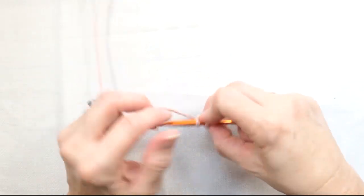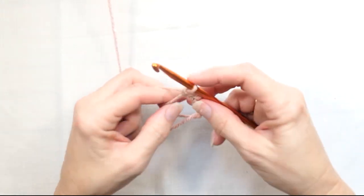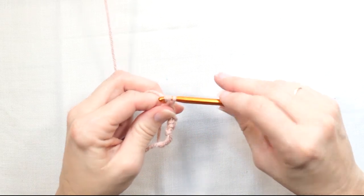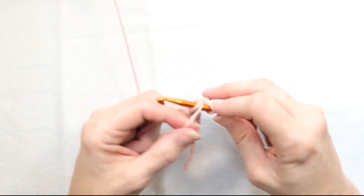So here I'm just doing some single crochets around the ring. I'll do a few so you can see what that looks like.